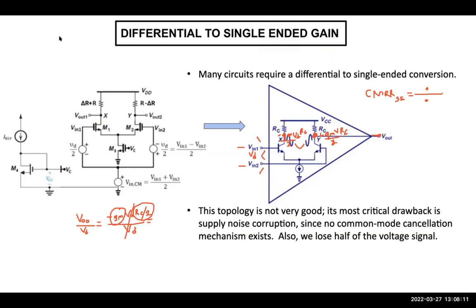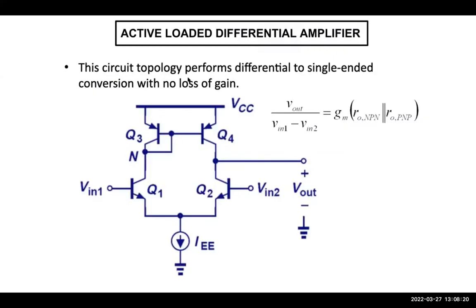And instead of this architecture, we are preferring this architecture. And it's called active loaded differential amplifier. So what we do is we connect this base and collector together. And whatever the small signal change here that corresponds to small change of current here, this one is current mirror.